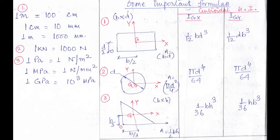The second set: 1 kilonewton is equal to 1000 newtons. The third set: 1 pascal equals 1 newton per meter square, 1 megapascal equals 1 newton per millimeter square, and 1 gigapascal equals 10 to the power 3 MPa. If you remember these formulae, they will help you in solving numericals.